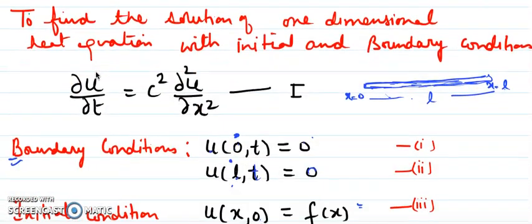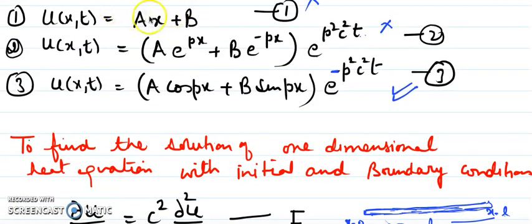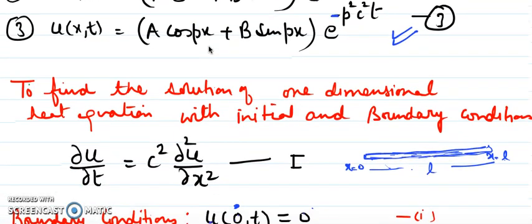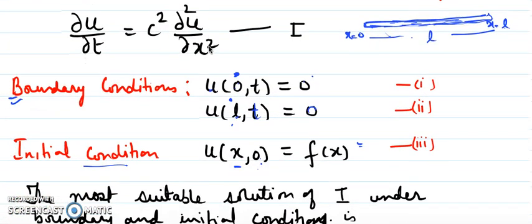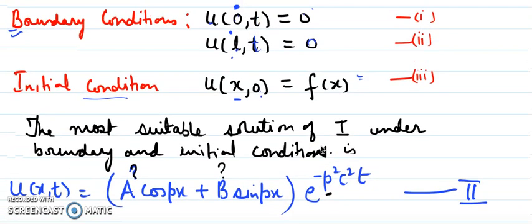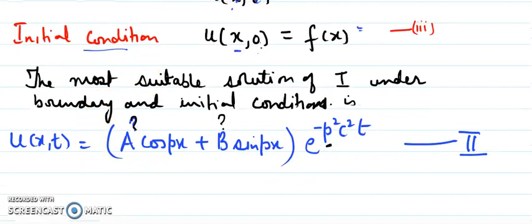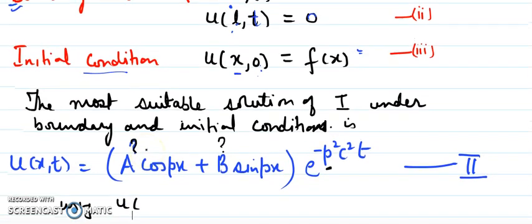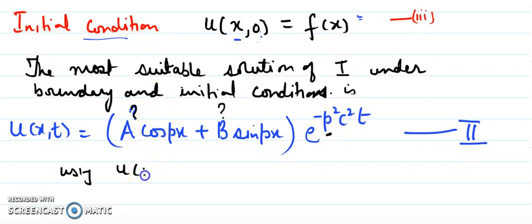If we apply the first two boundary conditions to answers one and two, we find only the trivial solution, which is not what we are looking for. We need the non-trivial solution, which can only be given by the third answer. So let's start by taking the general solution as u(x,t) = (A cos bx + B sin bx) e^(−b²c²t). Using the first boundary condition, when u is 0 at x=0, we get a zero answer.